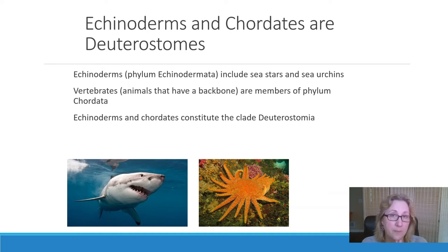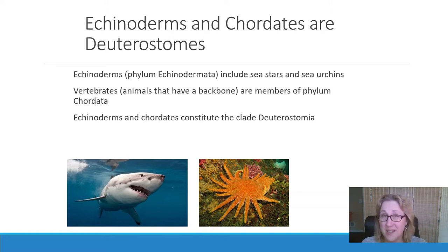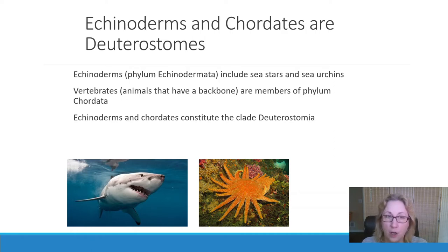It used to be thought that whether animals have deuterostomic or protostomic development would be a good way to classify all animals, but that turned out not to be the case. Within the deuterostomes — the echinoderms, the chordates, the hemichordates — they're all deuterostomic. But a few other groups, like most insects within the arthropods, also have deuterostomic development. So if we included all deuterostomic animals, it would not be a monophyletic clade.